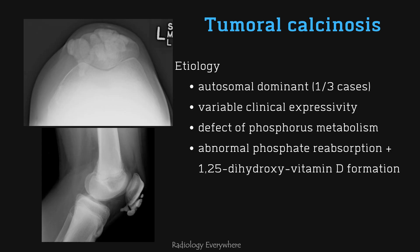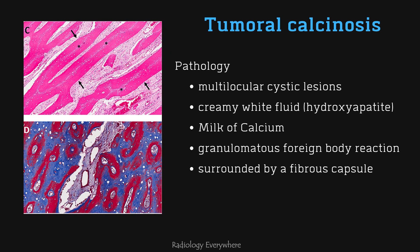Regarding etiology, one-third of cases are autosomal dominant with variable clinical expressivity. This unknown biochemical defect in phosphorus metabolism is responsible for abnormal phosphate reabsorption and 1,25-dihydroxyvitamin D formation. Pathologically, there are multilocular cystic lesions with creamy white milk — also called milk of calcium — or hydroxyapatite crystals in suspension with granulomatous foreign body reaction, surrounded by a fibrous capsule.